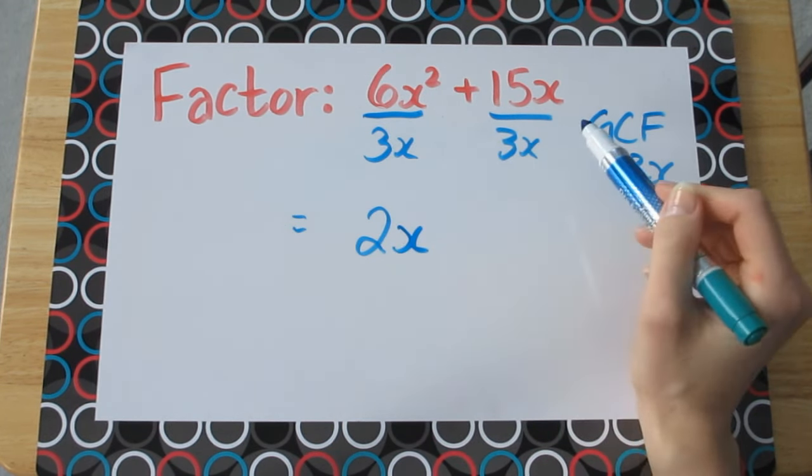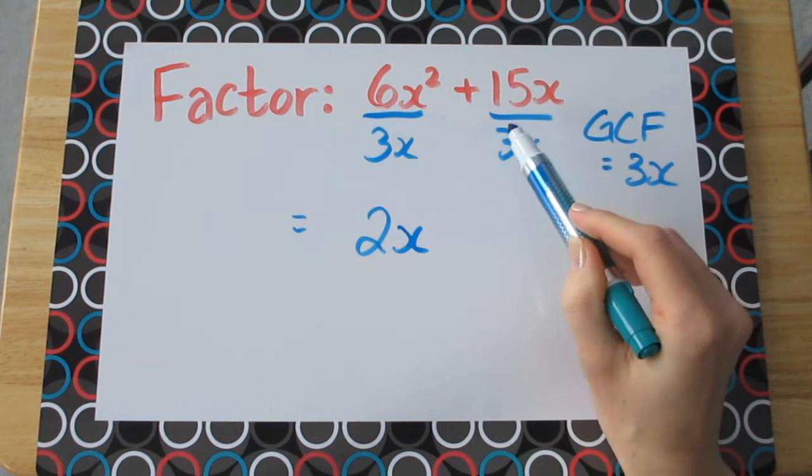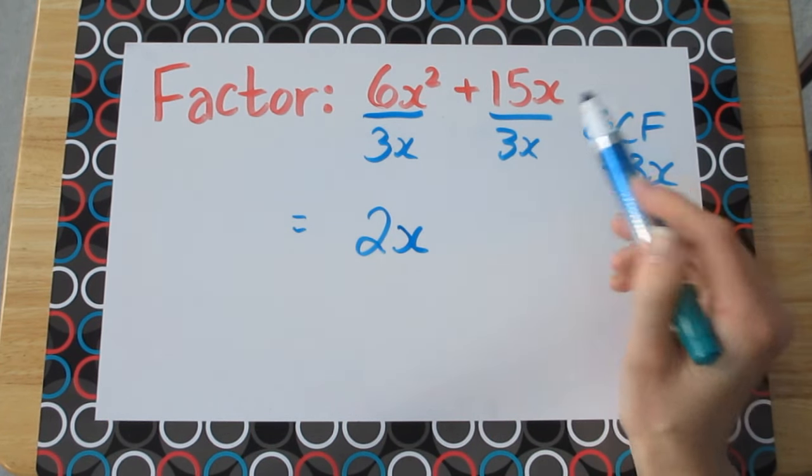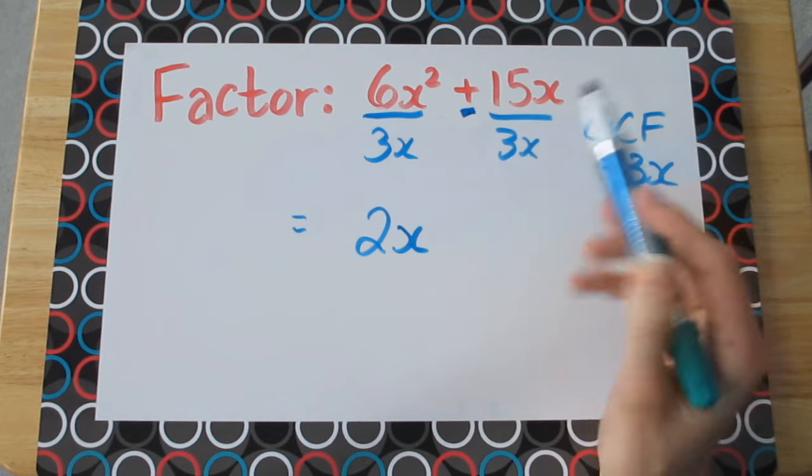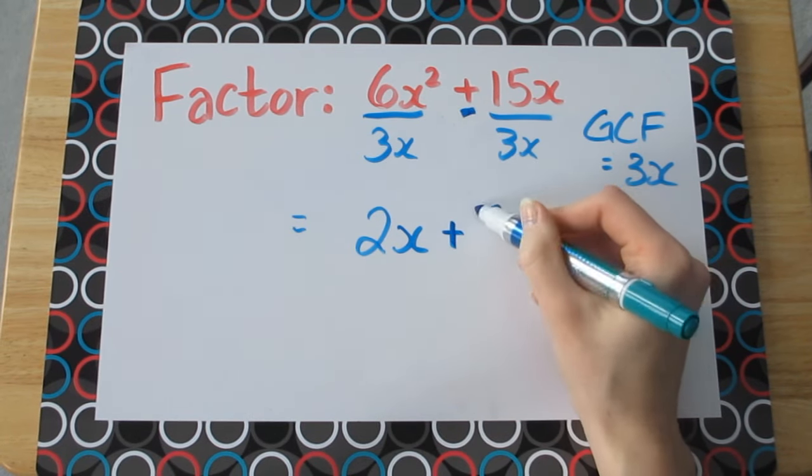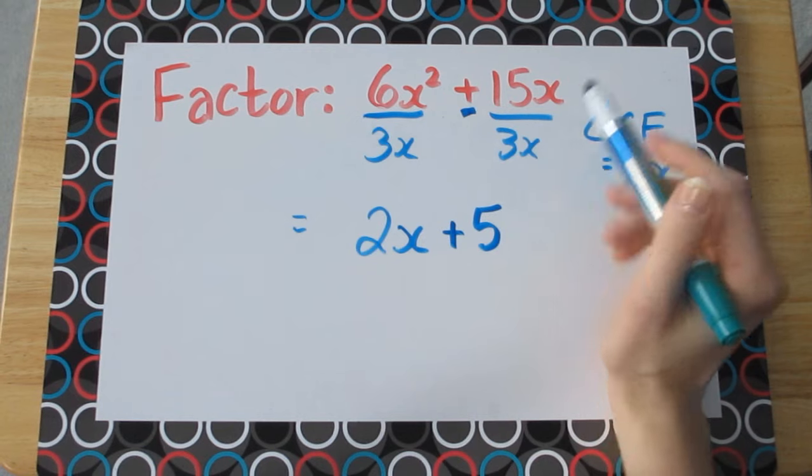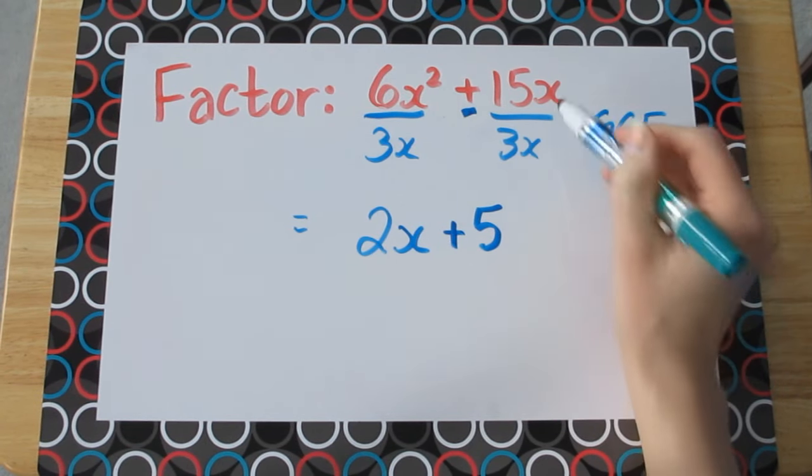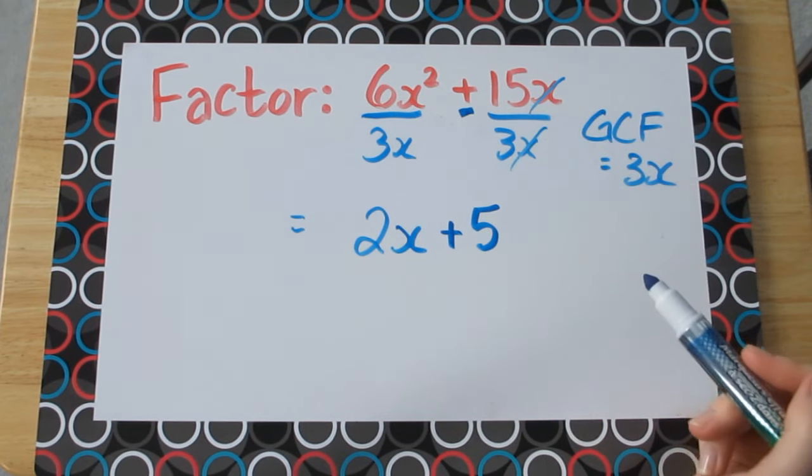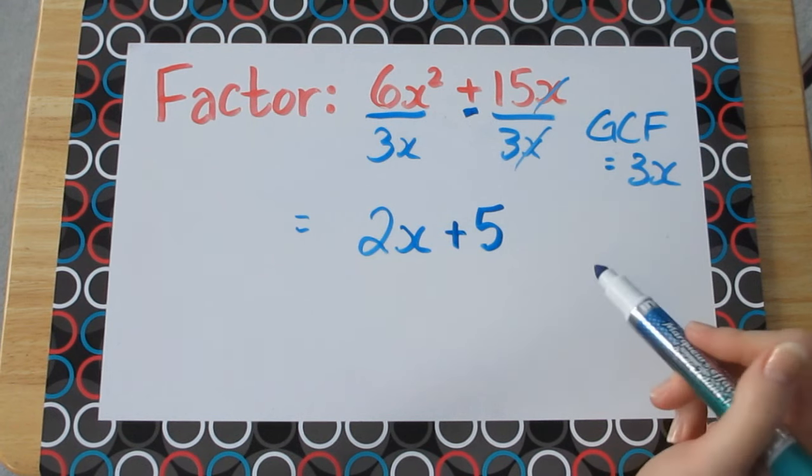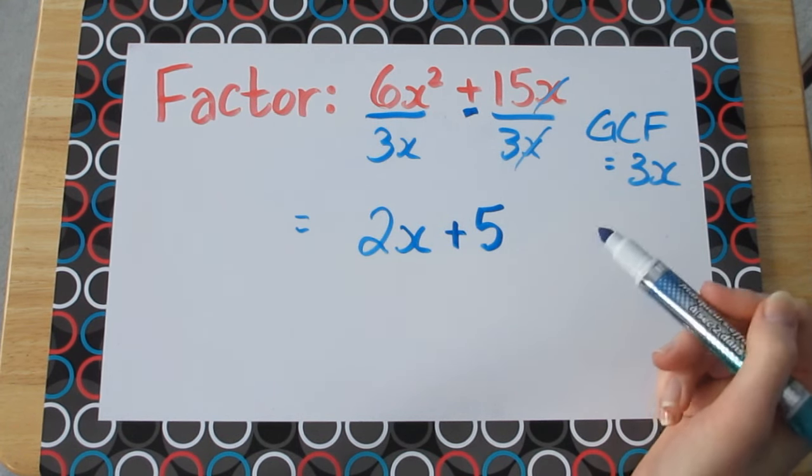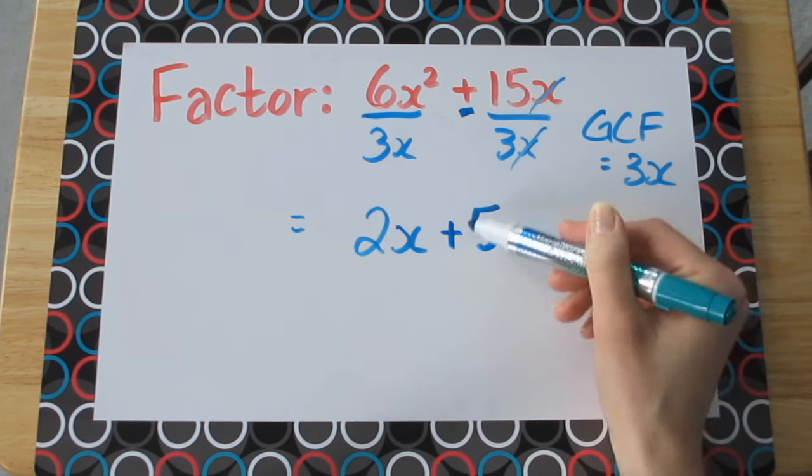In the second term here we have 15x divided by 3x. We know that positive 15 divided by 3 is 5, and the x on the top and the x on the bottom are going to cancel out because both of those have an exponent of 1, 1 minus 1 is 0, and anything to the exponent of 0 is just 1. So that will give us that answer of 5.